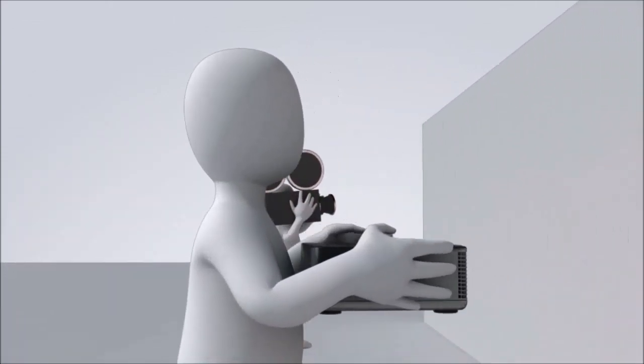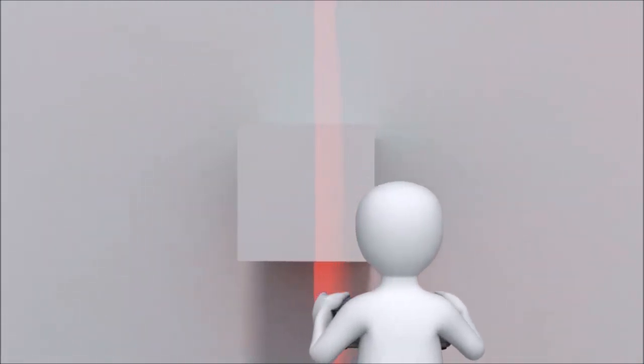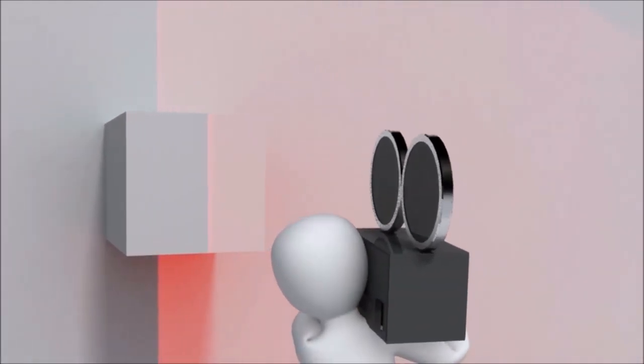Look what happens when we project a stripe on a smooth surface. Now look what happens when the light falls on a raised area of the surface. When we look at it from a different angle, the line is displaced.